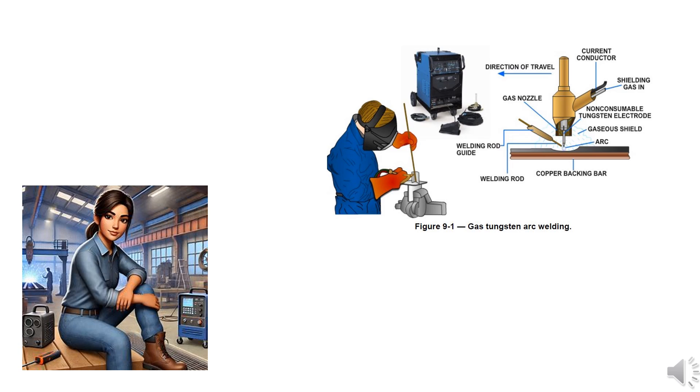GTAW was invented in 1941 by Russell Meredith from the Northrop Aircraft Welding Group. Initially referred to as HeliArc, the process used helium for shielding. Over time, argon became the preferred shielding gas due to its lower cost and higher availability.